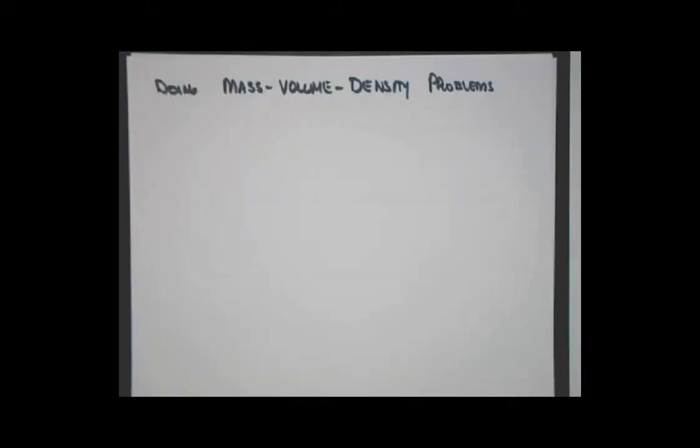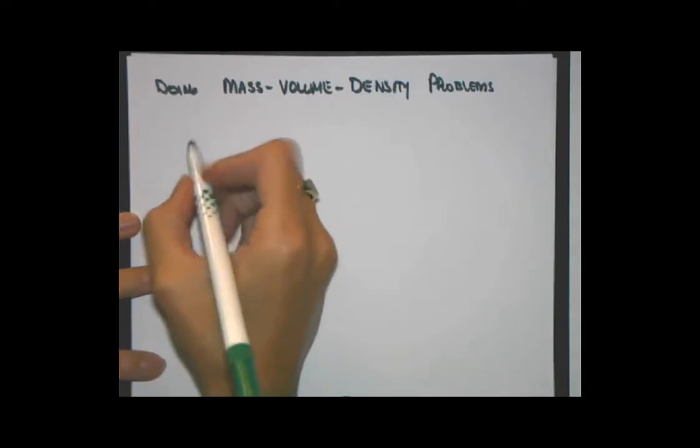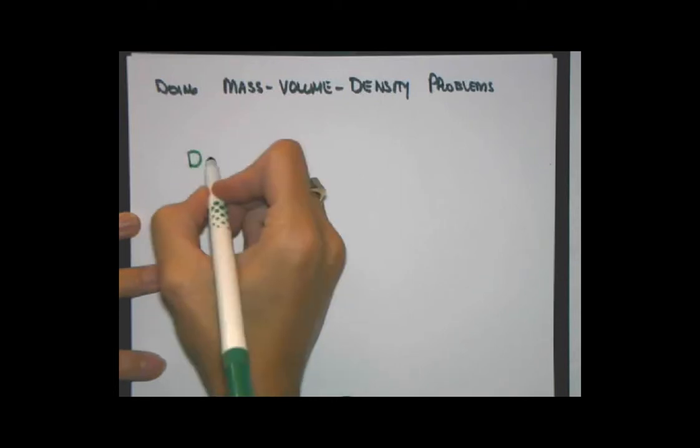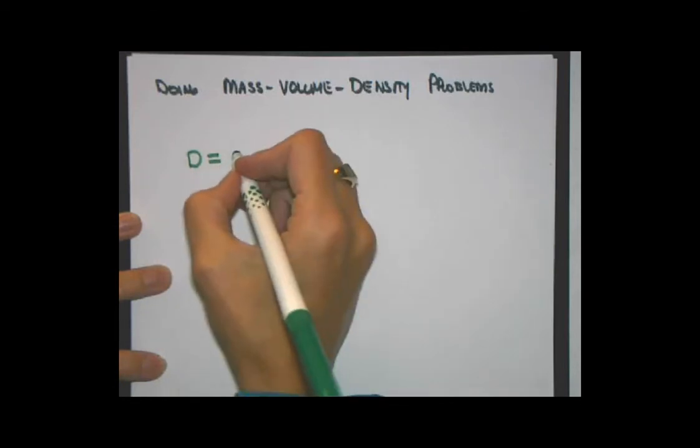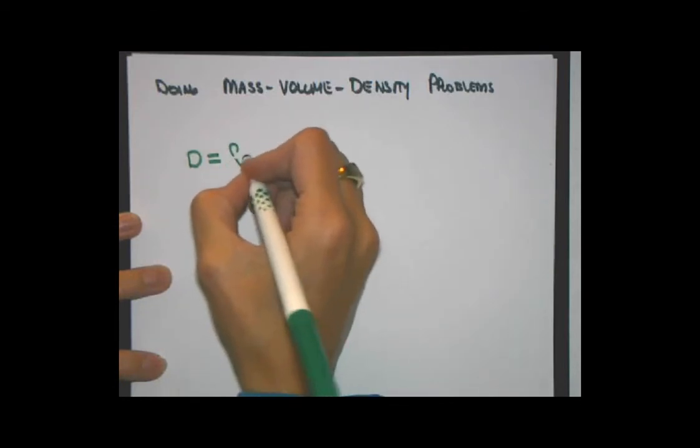Now let's look at how we actually do some problems that involve mass, volume, and density. So the first thing we need to do is we need to start out with the formula for density. There's two ways I'm going to show you to do this. The first, density equals, and I want you to think about, feel the love that you have for this topic in science. It's such a wonderful topic.